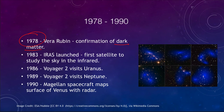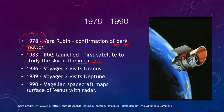In 1983, the IRAS satellite was launched to study the sky in the infrared. While a little infrared astronomy had been done from the surface, from balloons, and from high-flying aircraft, this was the first satellite permanently in orbit able to study the sky in the infrared part of the spectrum.